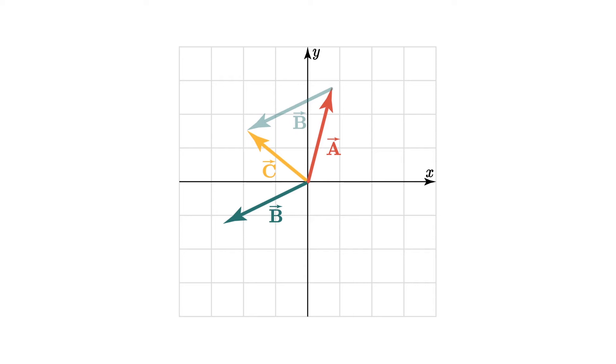I could have also added a to b by sliding the tail of a to the head of b. You can see that this makes a parallelogram and the sum, vector c, is just the diagonal of this parallelogram.